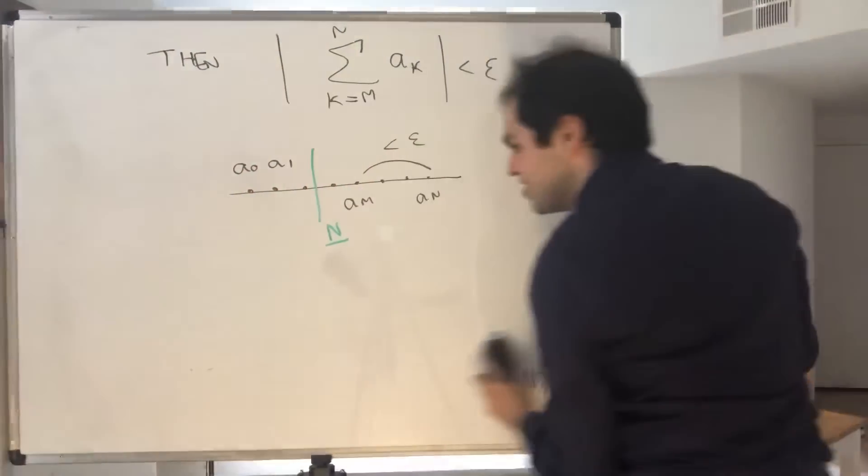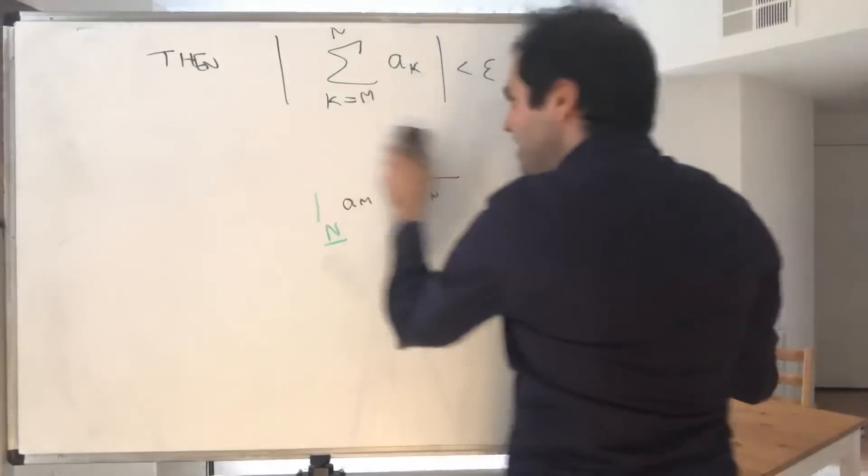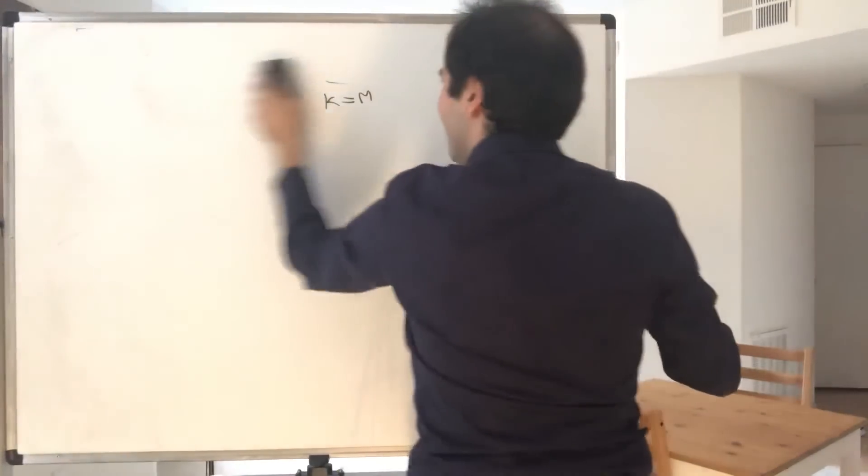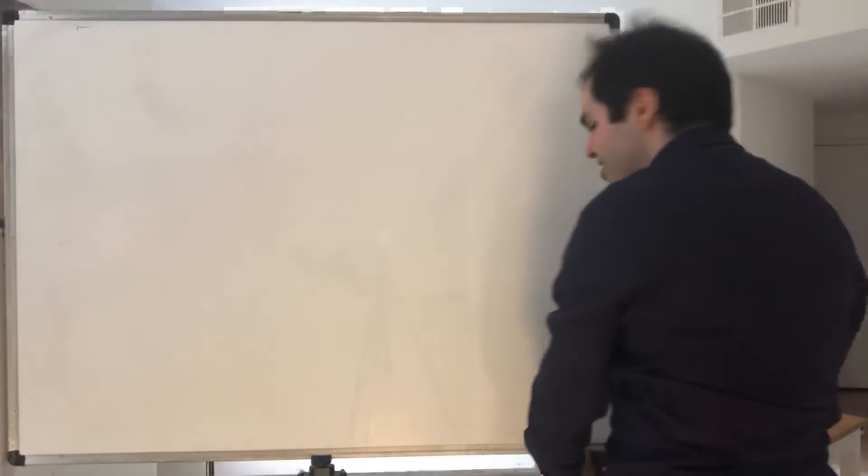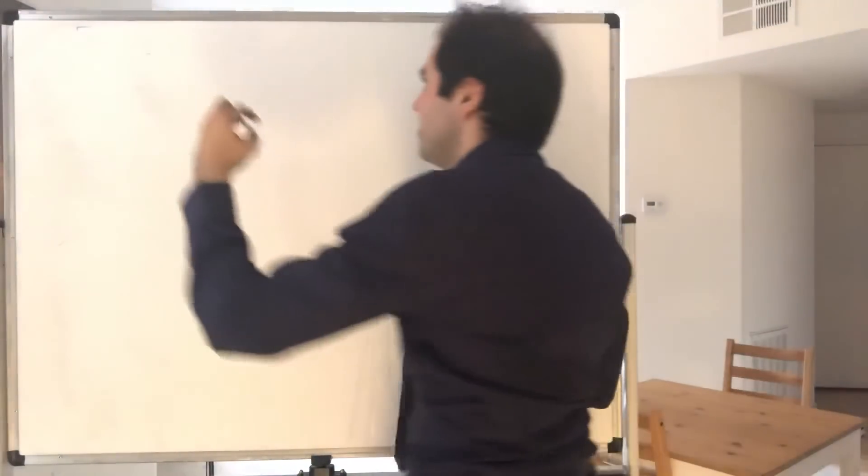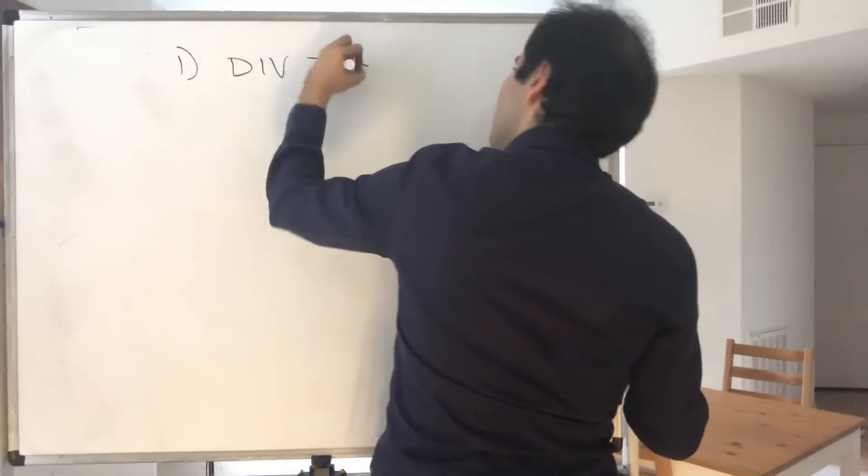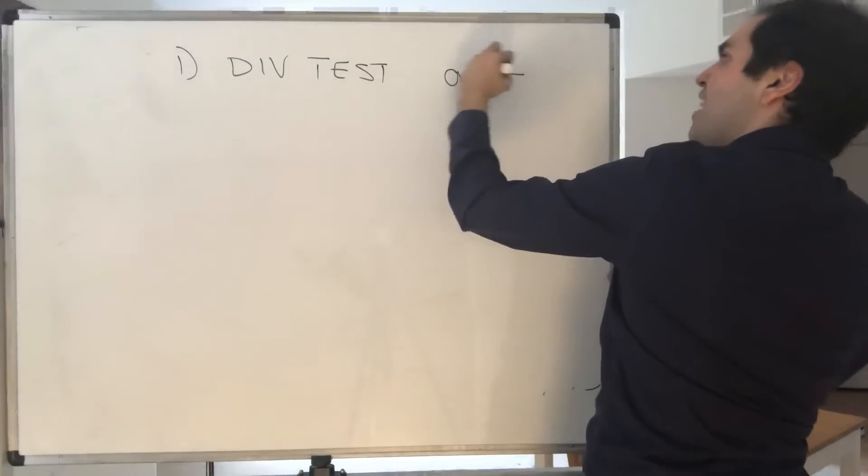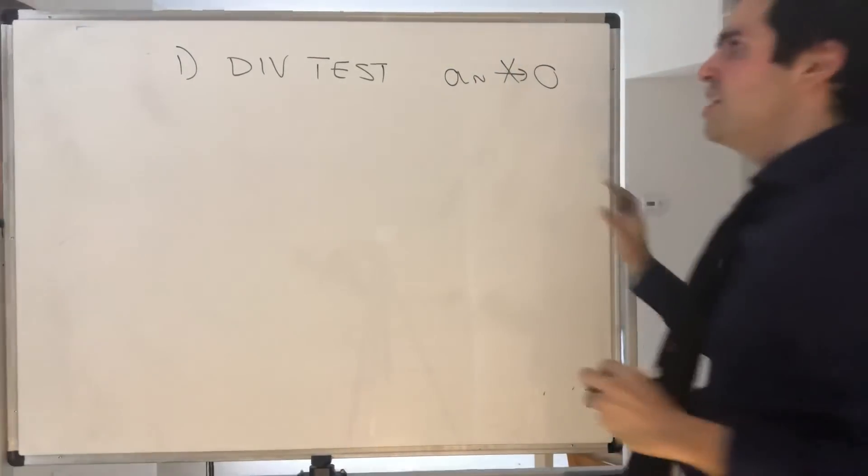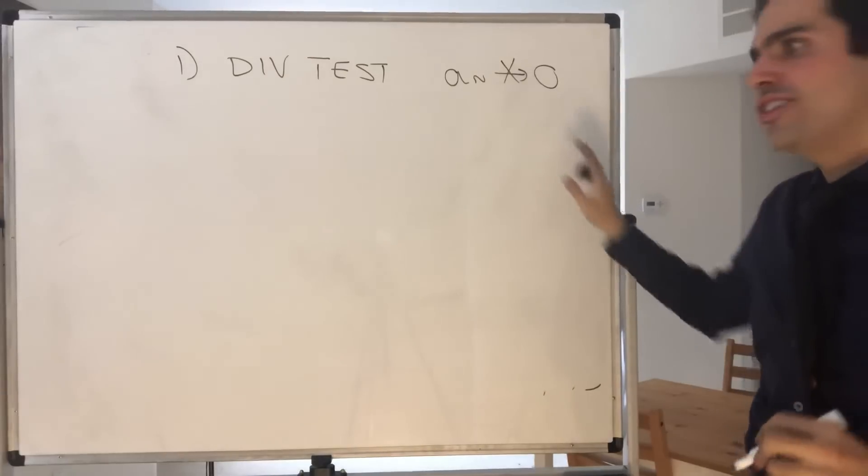But, of course, there are, then, more easier ways of testing for convergence, which I'll just mention now. Of course, the proofs are in the videos. First of all, there's a divergence test, which simply says that if the sequence doesn't go to zero, then the series diverges.